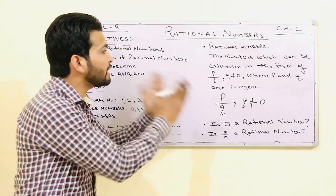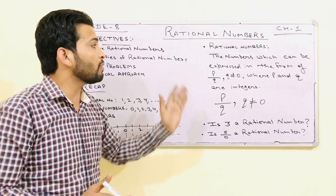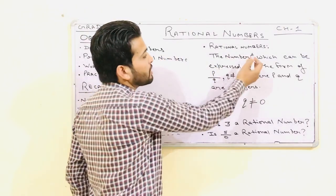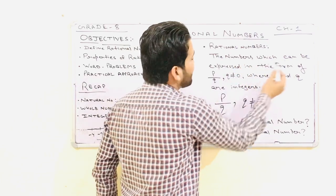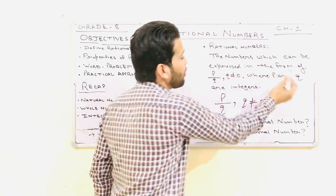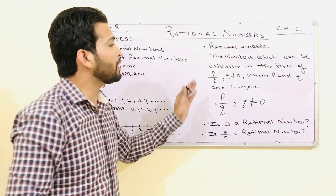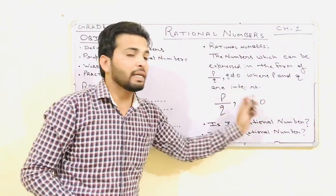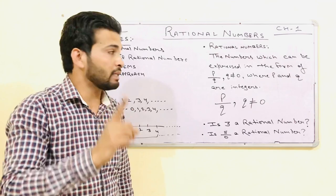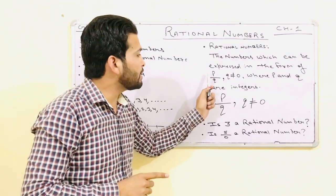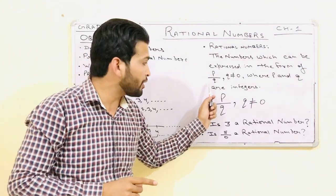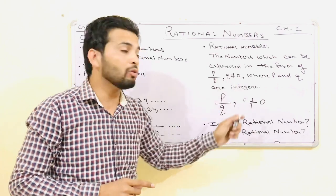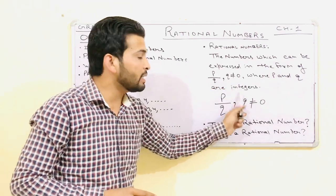Let's have an introduction of rational numbers. What are rational numbers? The numbers which can be expressed in the form of P upon Q, where Q is not equal to 0 and P and Q are integers.